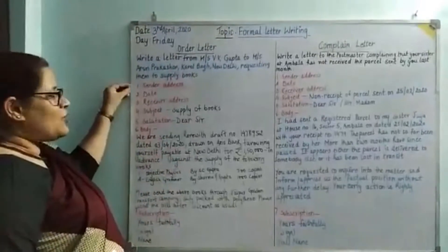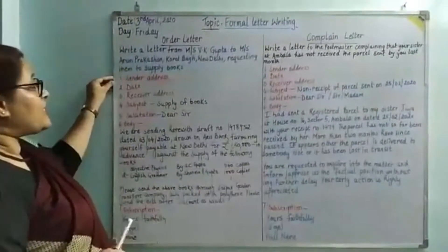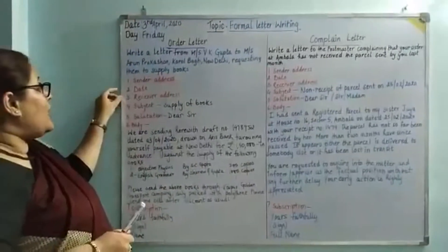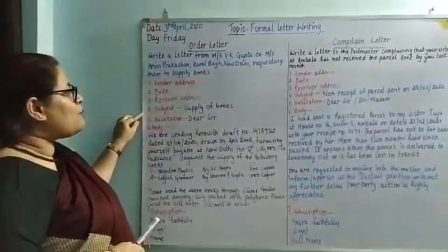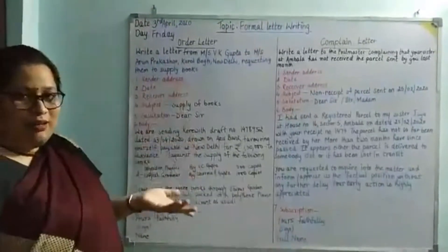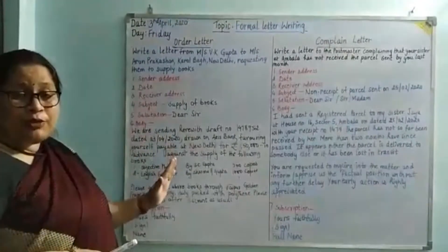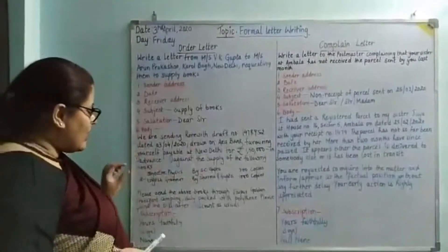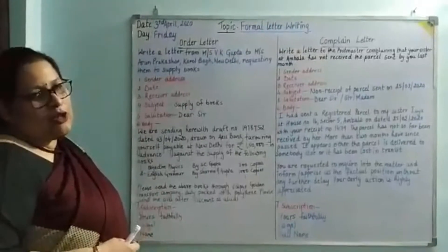I have not written down the sender address, but by now it is clear that we follow a block format — everything comes to the left. First will be the sender address, that is your address, then the date, then the receiver's address — which here is Arun Prakash in Karol Bagh, New Delhi. The subject will be 'supply of books', and the salutation will be 'Dear Sir' because Mr. Arun Prakash is a male. The body consists of two paragraphs: one talking about the amount you will be transferring via DD or demand draft, and which books you require and how many copies. The second paragraph covers the conclusion, followed by subscription — that is the closing and signature.